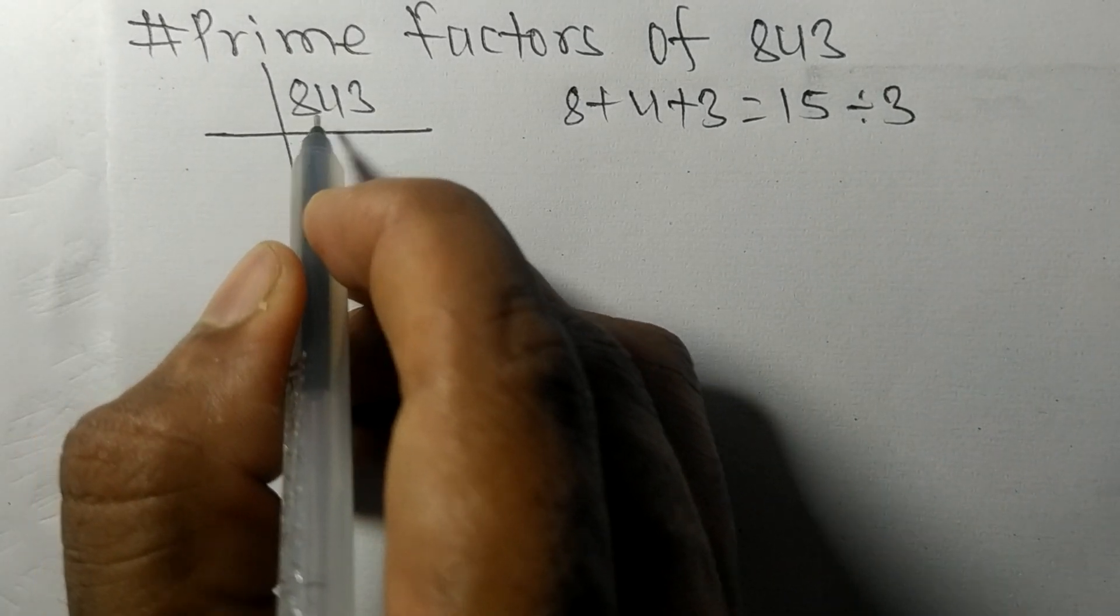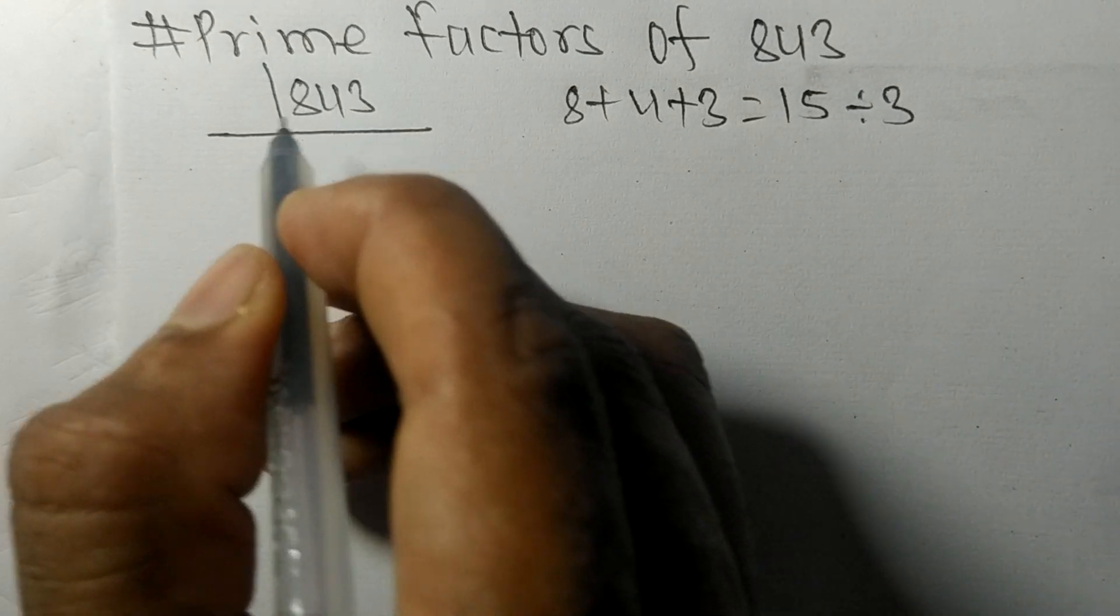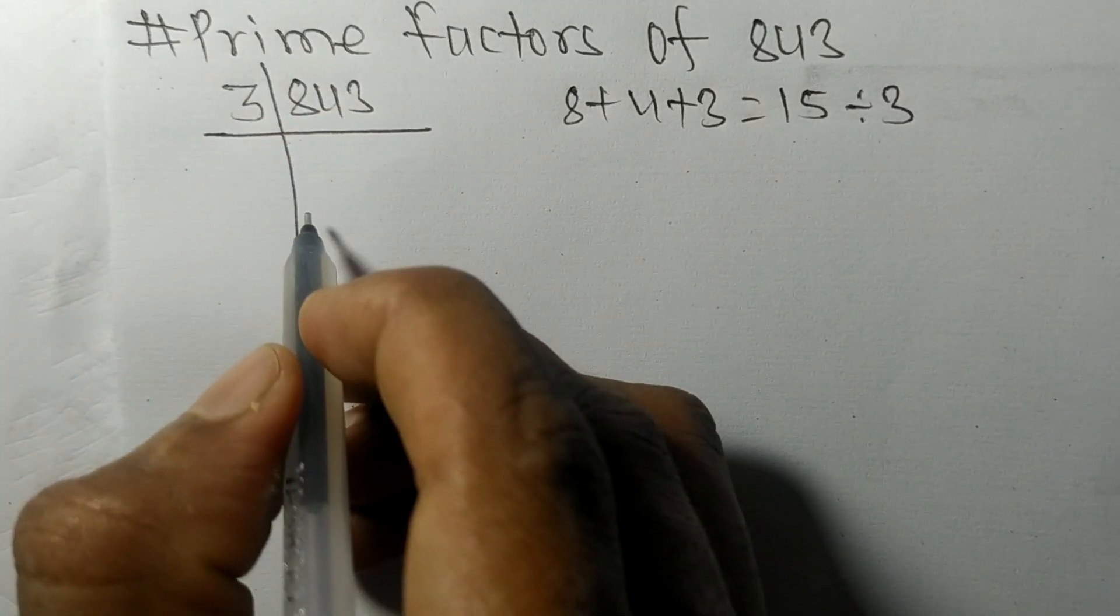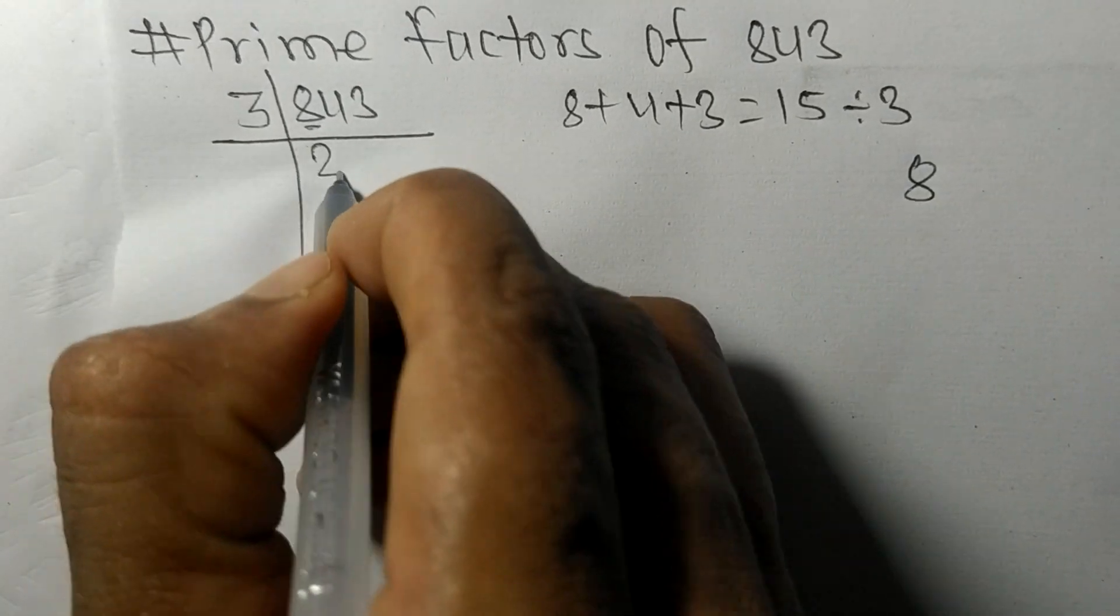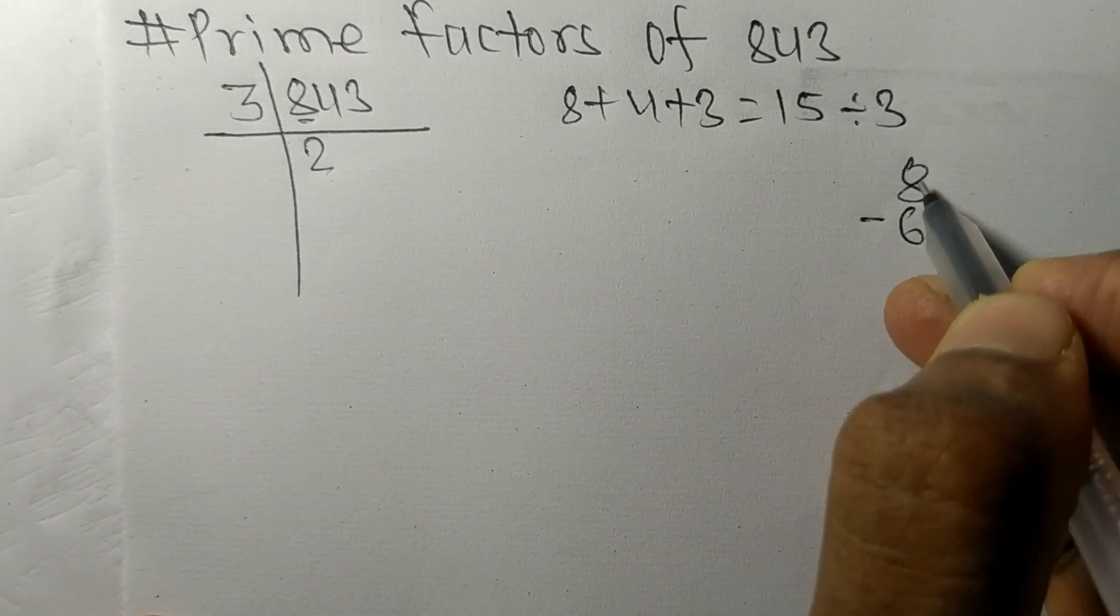So 843 is also divisible by 3. First we have 8. 3 times 2 equals 6.